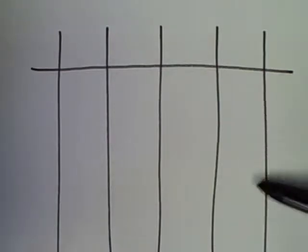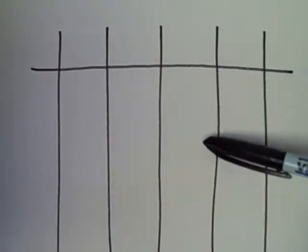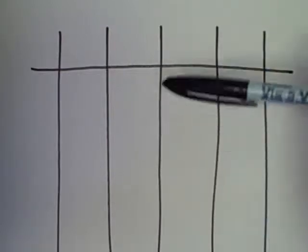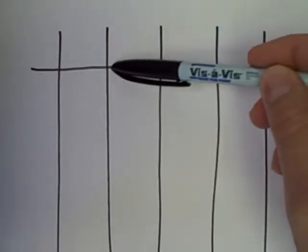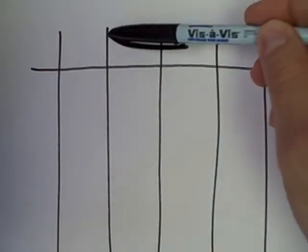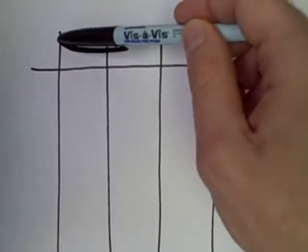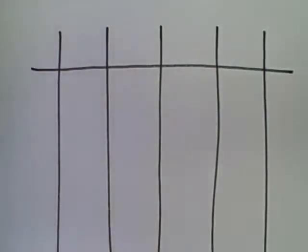So we've got ones, fives, tens, fifties, hundreds, five hundreds, thousands, five thousands, ten thousands, and fifty thousands.